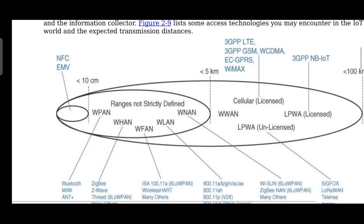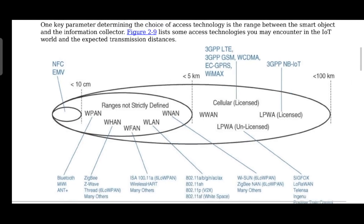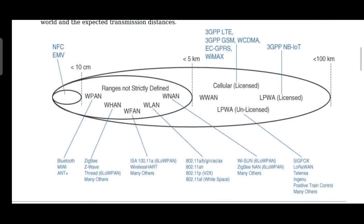For mobile communication, the same technologies currently in use can be applied. This includes cellular licensed networks, WWAN, LPWA licensed, and LPWA unlicensed. For ranges up to 5 kilometers, we can use WPAN, WHAN, WFAN, WLAN, and WNAN.